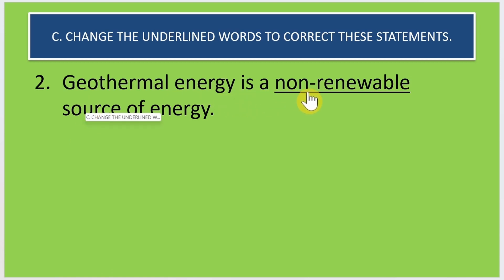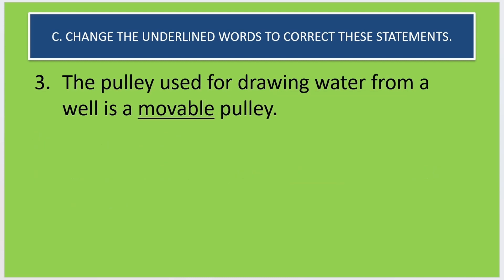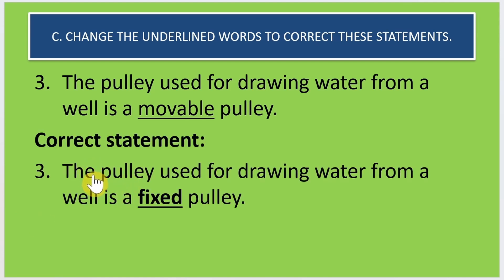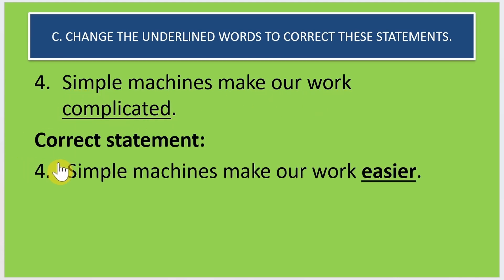Second: geothermal energy is a non-renewable source of energy — this is incorrect. Geothermal energy is a renewable source of energy. Third: the pulley used for drawing water from a well is a movable pulley — the correct statement is the pulley used for drawing water from a well is a fixed pulley.